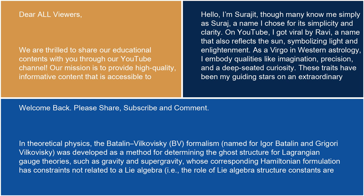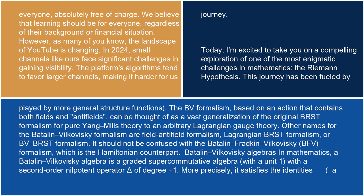In theoretical physics, the Batalin-Vilkovisky (BV) formalism, named for Igor Batalin and Grigory Vilkovisky, was developed as a method for determining the ghost structure for Lagrangian gauge theories, such as gravity and supergravity, whose corresponding Hamiltonian formulation has constraints not related to a Lie algebra — i.e., the role of Lie algebra structure constants is played by more general structure functions. The BV formalism, based on an action that contains both fields and antifields, can be thought of as a vast generalization of the original BRST formalism for Yang-Mills theory to an arbitrary Lagrangian gauge theory.